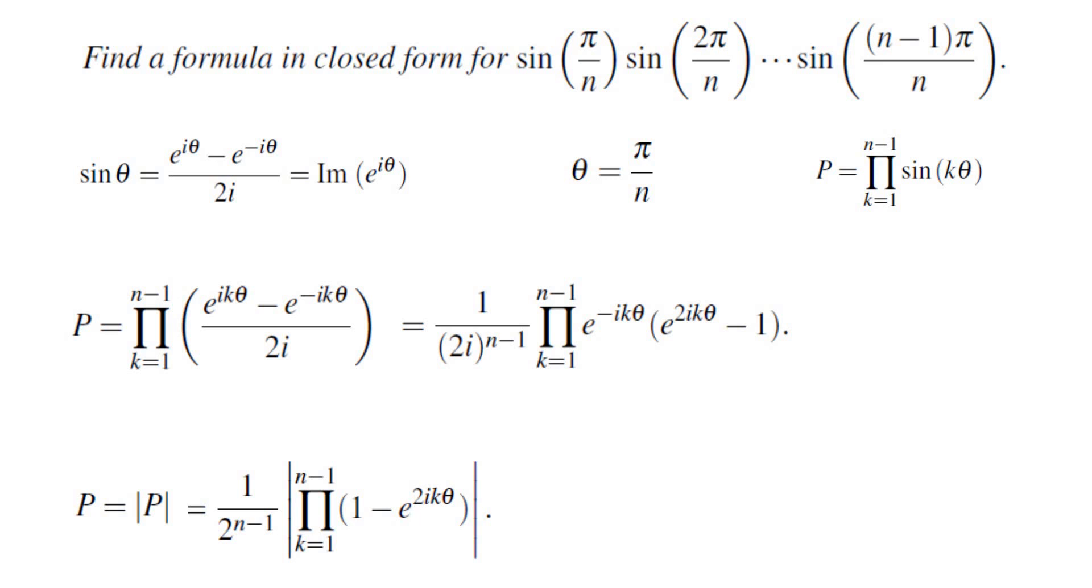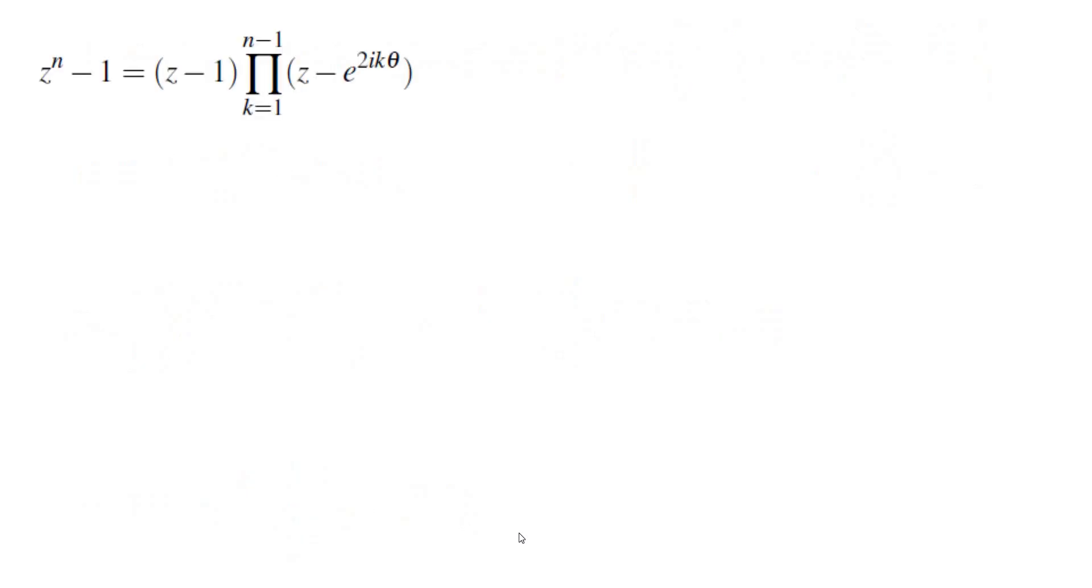we know that they are roots of z^n - 1. Therefore, we can factor z^n - 1 as the product of (z - e^(2ikθ)). However,